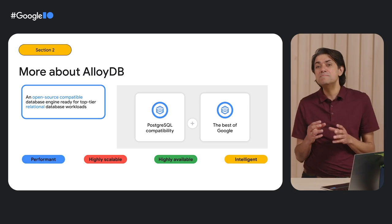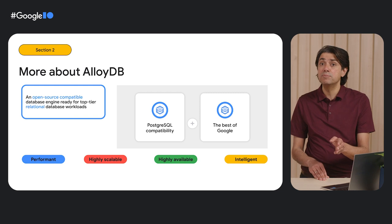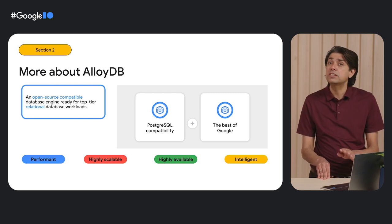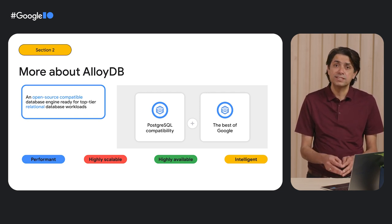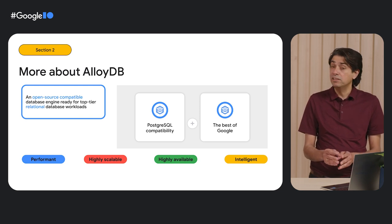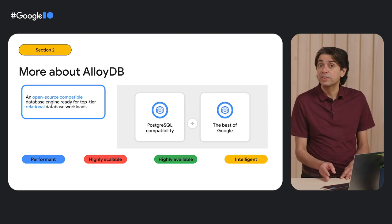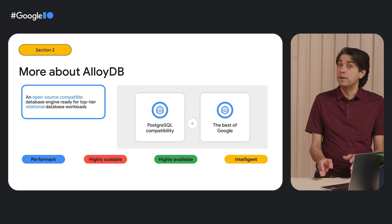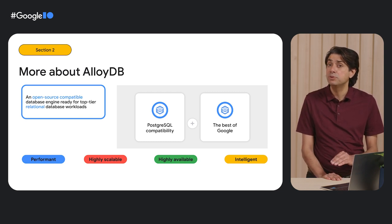AlloyDB is our fully managed Postgres-compatible database that we built to help you cost-effectively modernize from legacy databases or scale your existing Postgres apps. It's Google's newest cloud database with all the goodness of Postgres and all the goodness of Google technology. In our performance tests, AlloyDB is four times faster than standard Postgres and two times faster than Amazon's comparable Postgres-compatible service for transactional workloads.